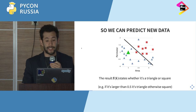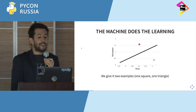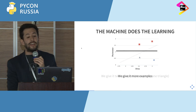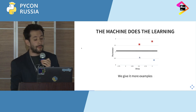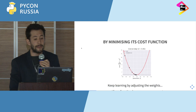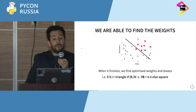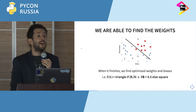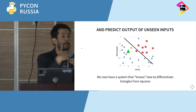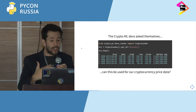More specifically, this is a function where X is the input and M and B are the weights and the bias. We want to get this function so that when we get a new piece of information, we can predict what class it is. We let the machine do the learning: we give it two examples and it guesses a line, we give it more examples and it gets better, continuing to improve by minimizing the cost function until we find the local optimum and can predict new data.